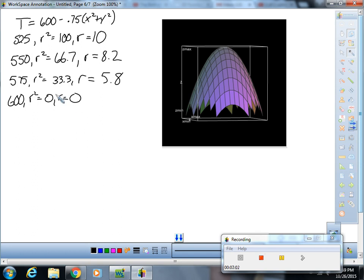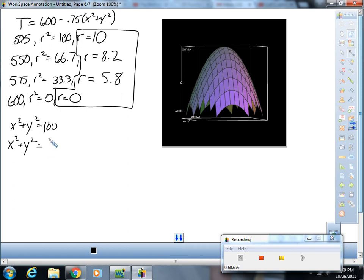So these are the four isothermal curves that I'm going to graph. Or you can think about them as I'm graphing x squared plus y squared equals 100, x squared plus y squared equals 66.7, x squared plus y squared equals 33.3, and I'm graphing x squared plus y squared equals 0. Those are my four isothermal curves.